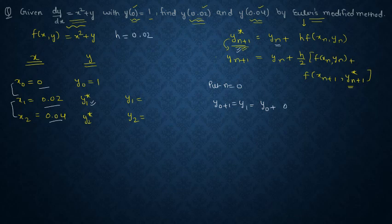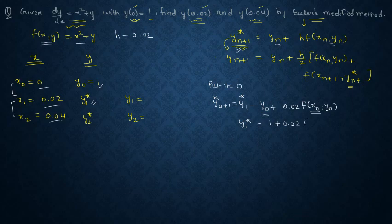So y₀ plus 0.02·f(x₀, y₀) because n is 0 here. So this will be your y₁*. So y₁* is y₀ which is given to you as 1 plus 0.02.